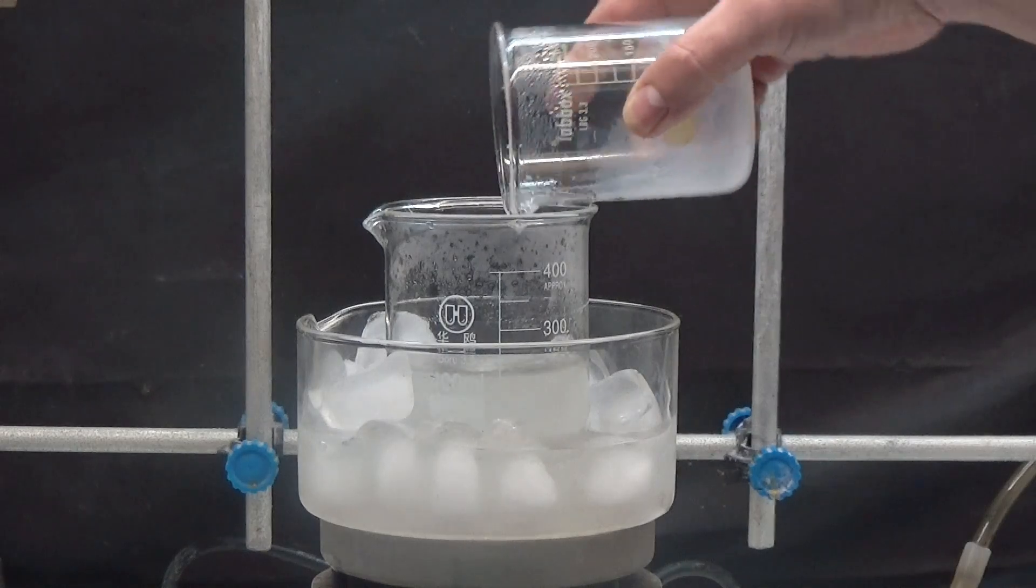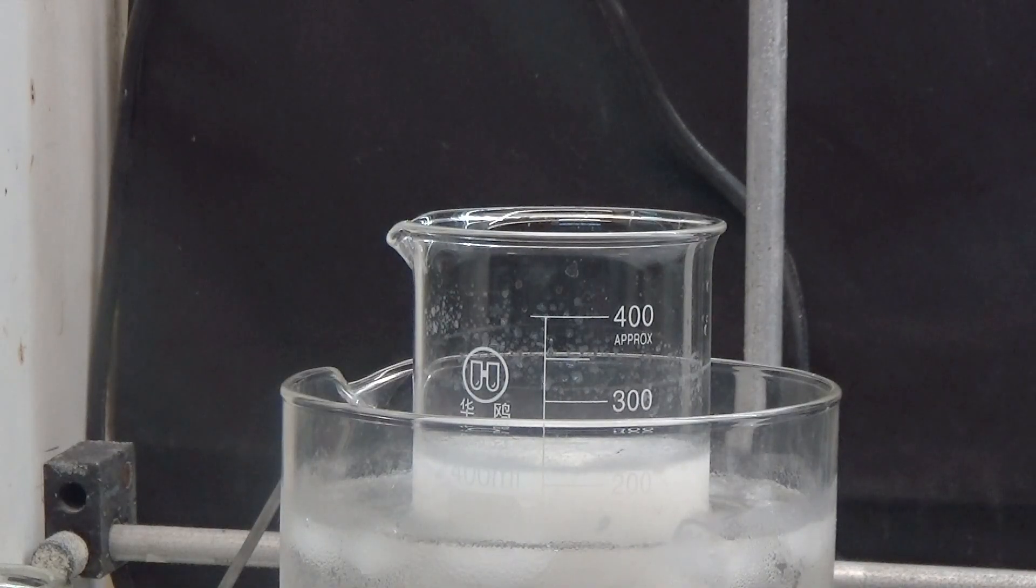Keep stirring in the ice bath for 30 minutes. A white precipitate of potassium cyanate is formed.